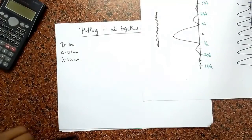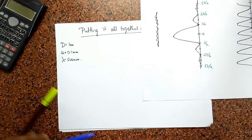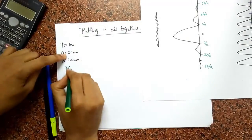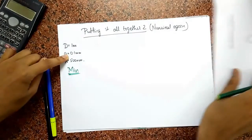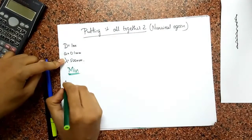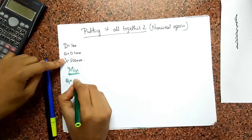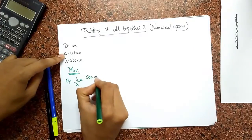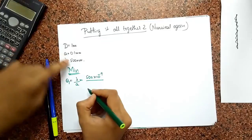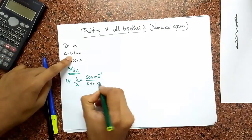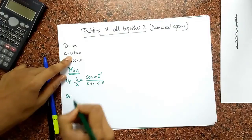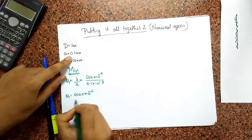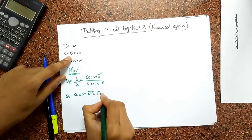The minimas — where are they going to be? The first minima theta-1 is going to be at lambda/A, and that's going to be 500 × 10⁻⁹ divided by A, which is 0.1 × 10⁻³. So theta-1 is going to be 5,000 × 10⁻⁶, or 5 milliradians.